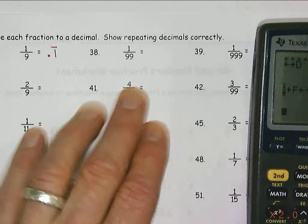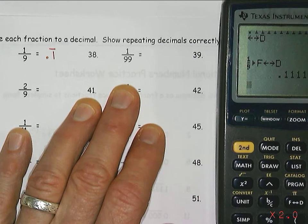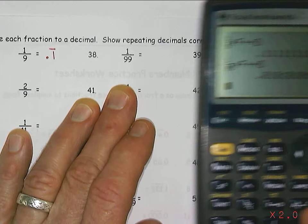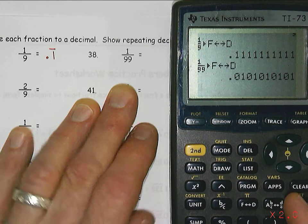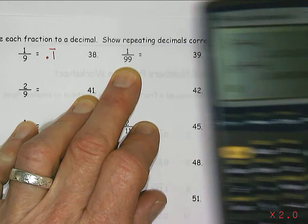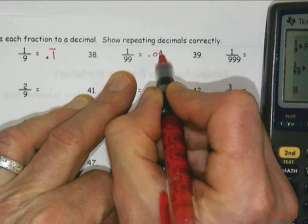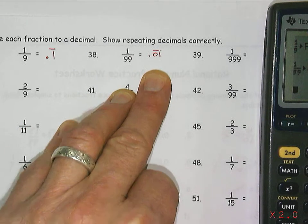And I want to do a couple more just because the notation is important. So if I have 1 over 99, so 1 over 99 fraction to decimal, you get 0.0101. So you have two numbers repeating, which makes sense. You have two nines, so there should be two numbers repeating. And all I need is those two numbers with a line over both of them, and that indicates that they both continue on forever.